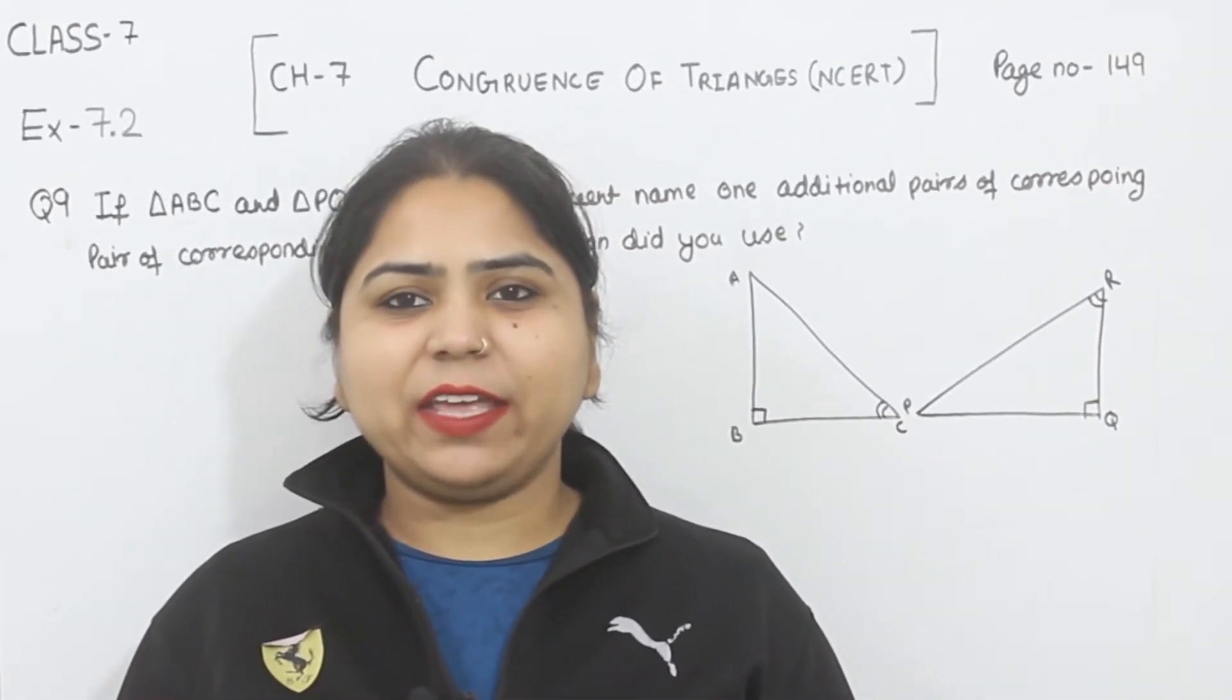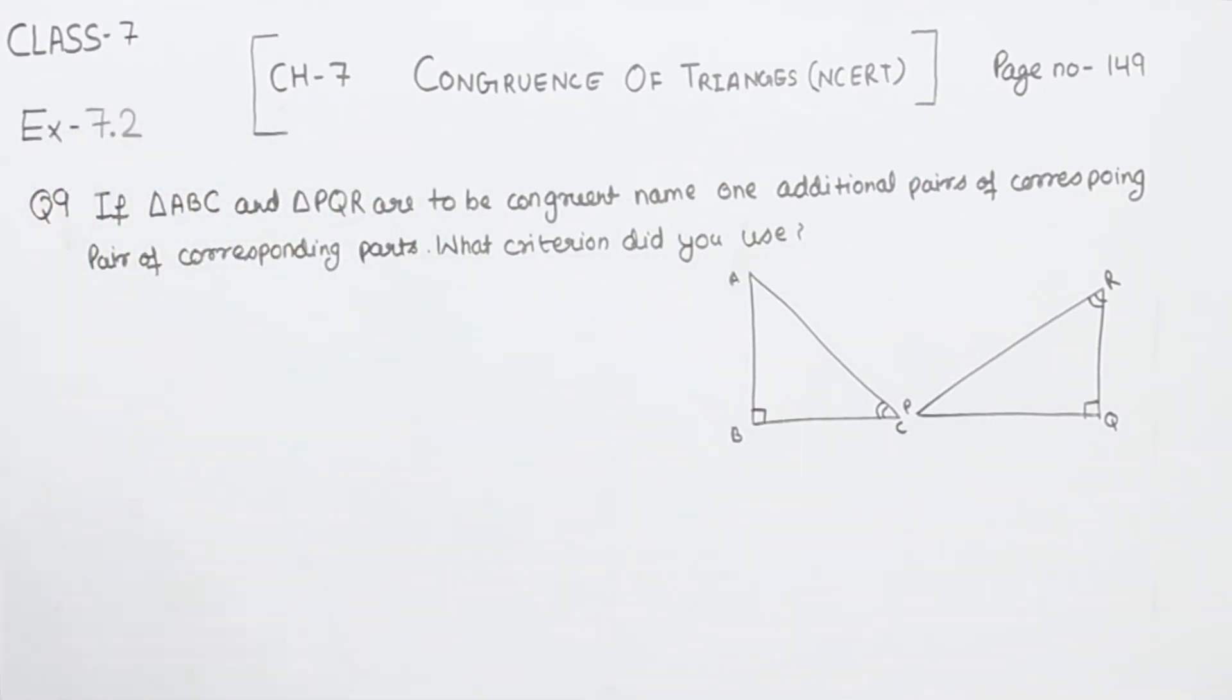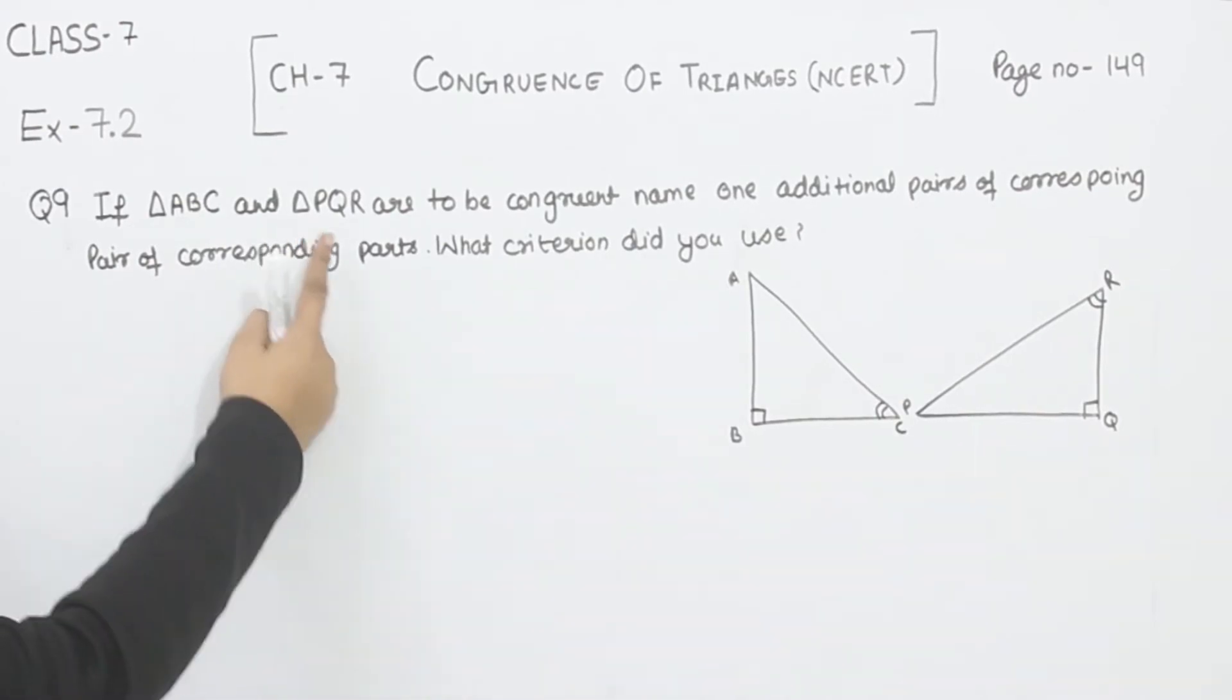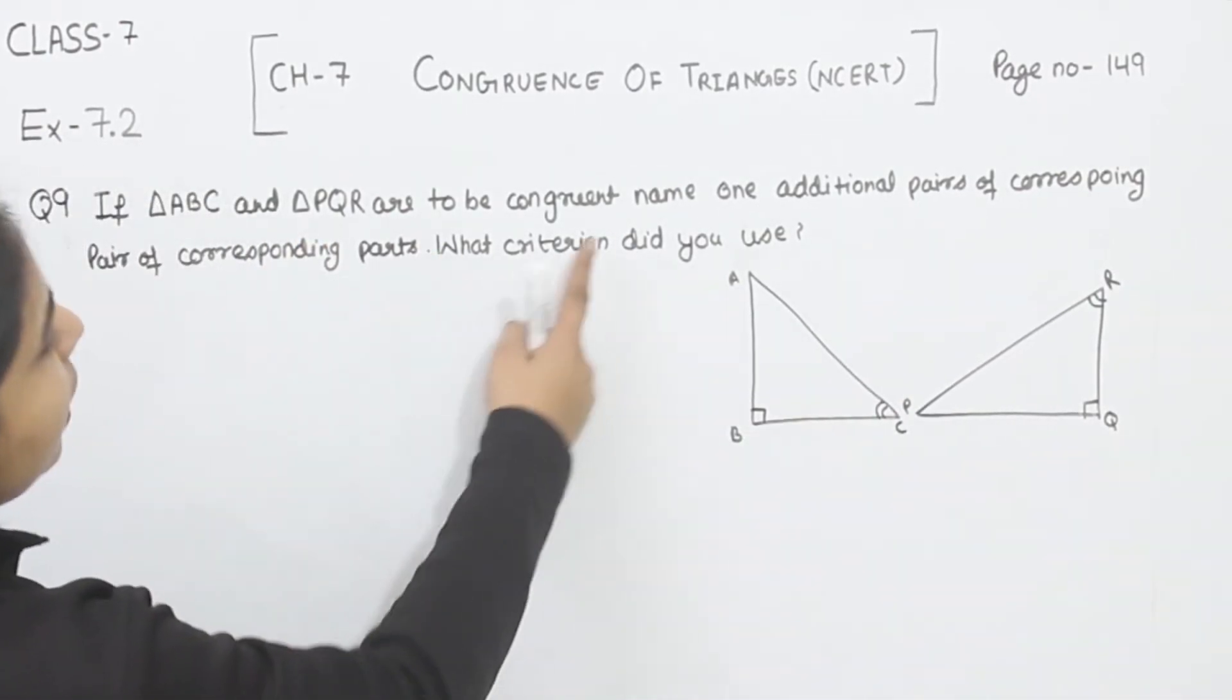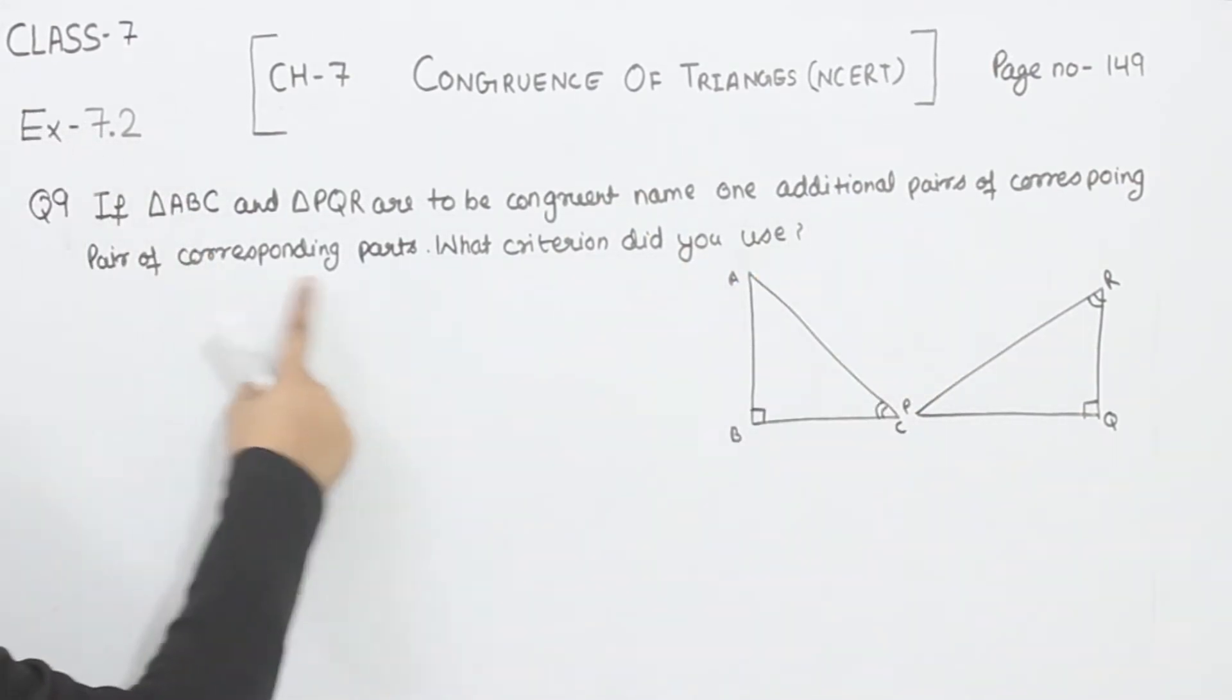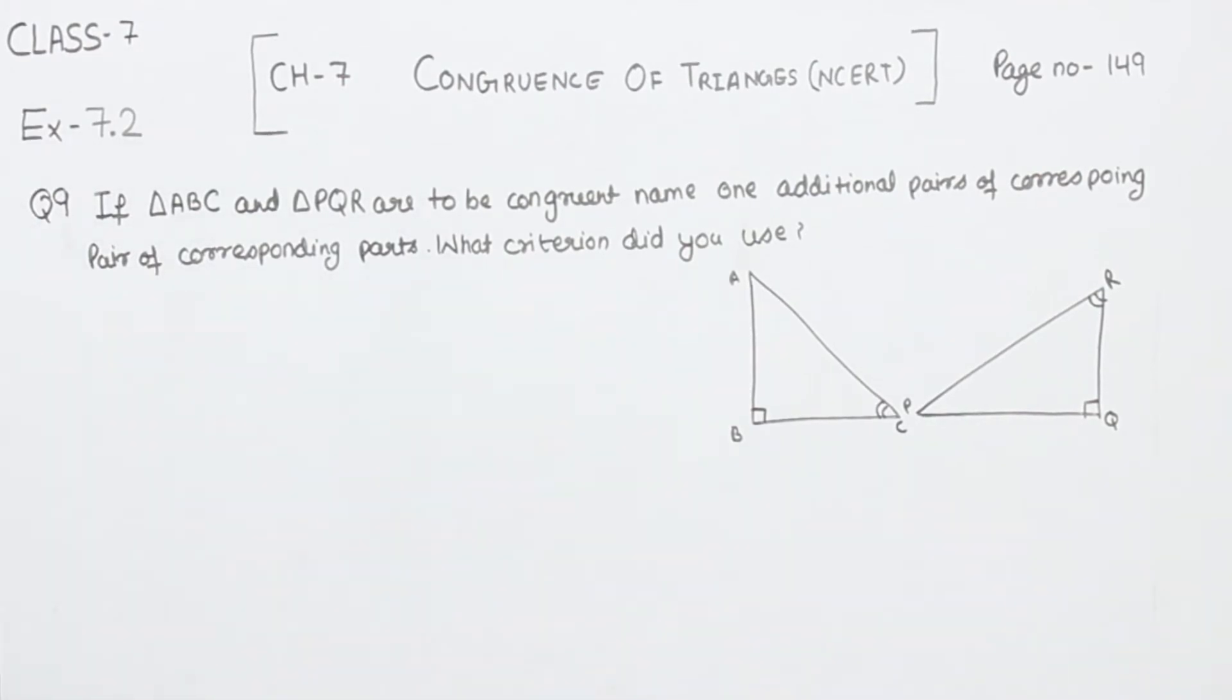Hi everyone, this is Preeti. We are here with another question of Exercise 7.2, page number 149, question number 9. If triangle ABC and triangle PQR are to be congruent, name one additional pair of corresponding parts. What criteria did you use? So we are having two triangles, triangle ABC and triangle PQR.